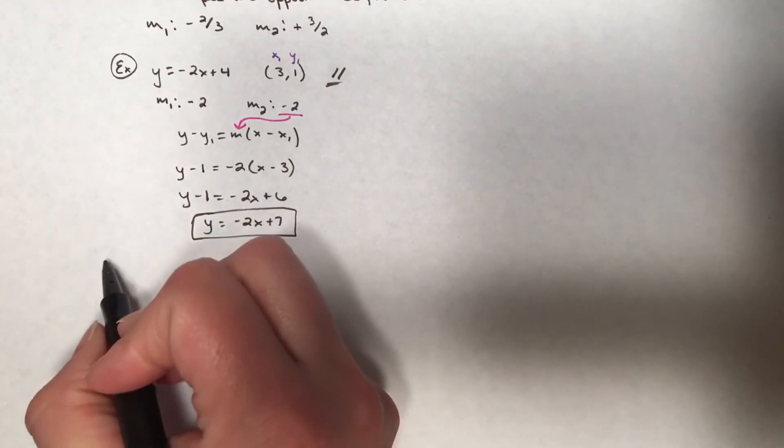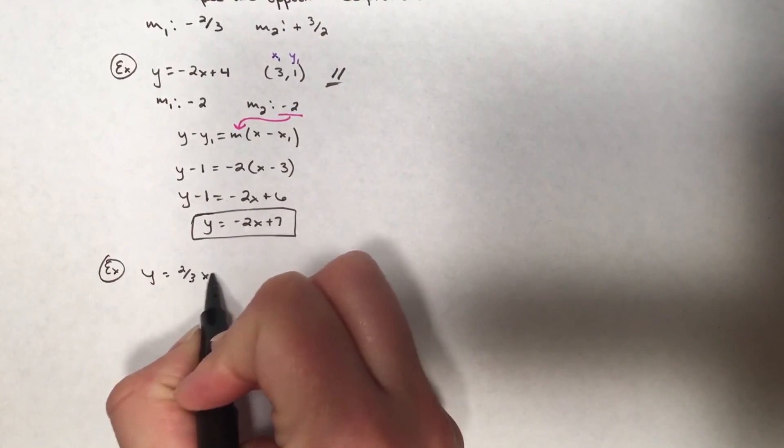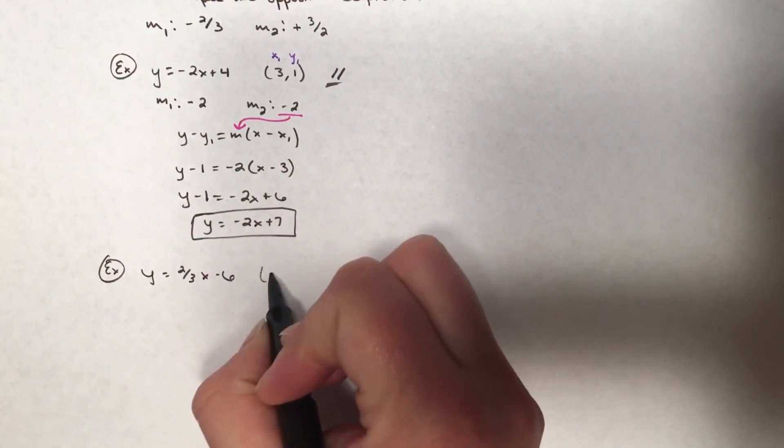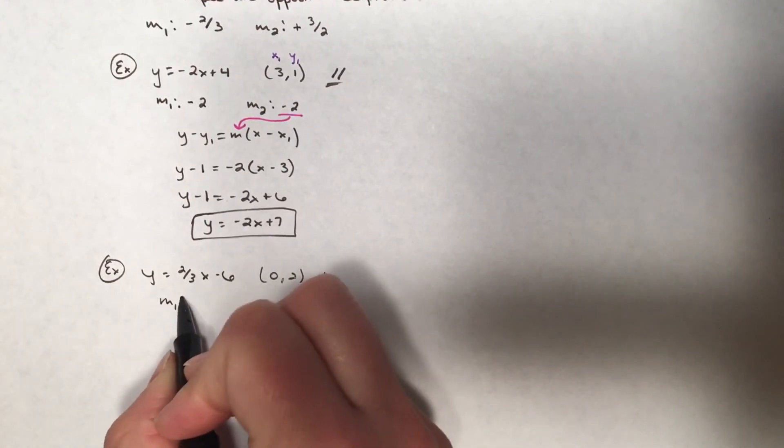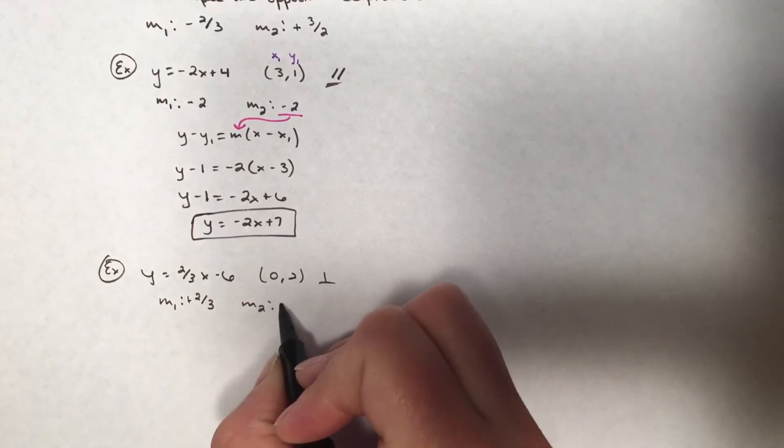Now let's look at another example, but this time perpendicular. Y equals two-thirds x minus 6, going through the point (0, 2). The slope is positive two-thirds; the perpendicular slope is negative three over two.